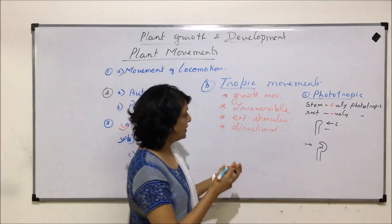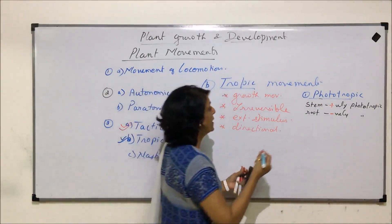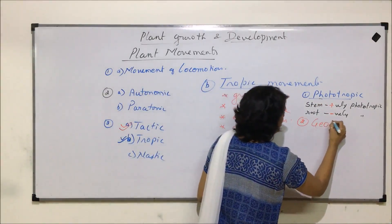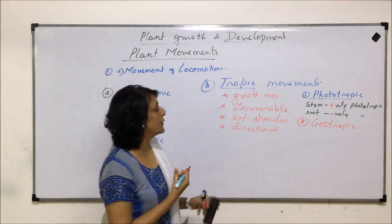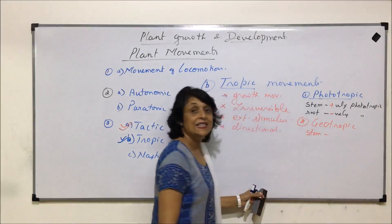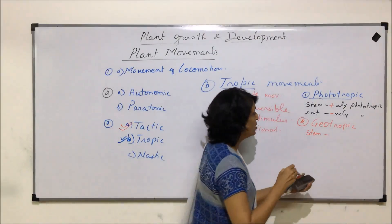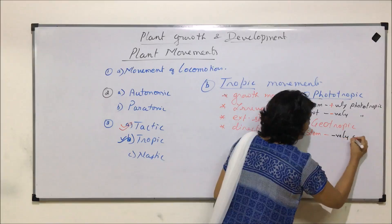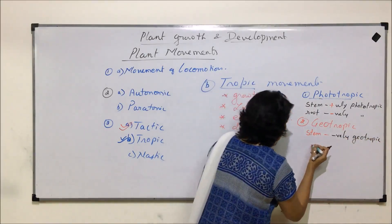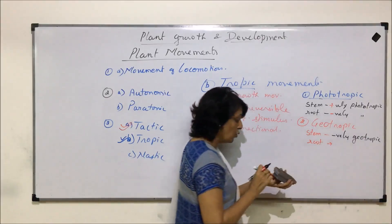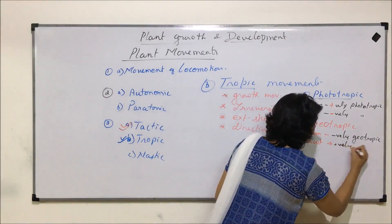If the stimulus is gravity, the movement is called geotropic movement. Stems move away from the center of gravity, so they are negatively geotropic. Roots grow towards the center of gravity and are therefore positively geotropic. Pneumatophores are an exception — they are negatively geotropic, coming out of the ground surface.